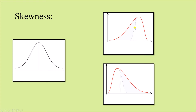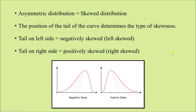As you can see, these curves are not bilaterally symmetrical or bell-shaped. This kind of distribution which is asymmetric in nature is known as a skewed distribution, and the curve is called a skewed curve. The position of the tail of the curve determines the type of skewness.